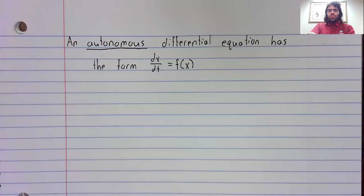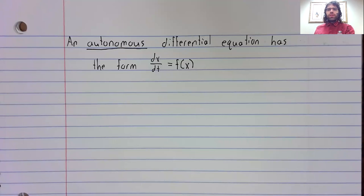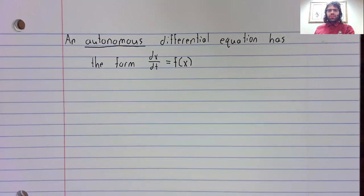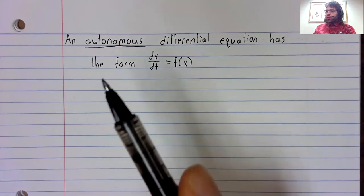A differential equation is called autonomous if it has the form dx/dt = f(x). In other words, a first derivative equals a function of the dependent variable.